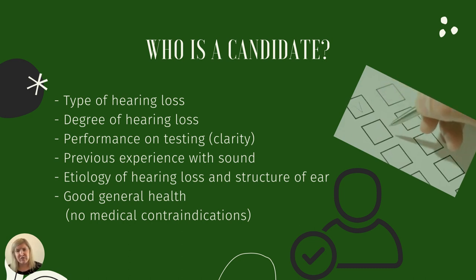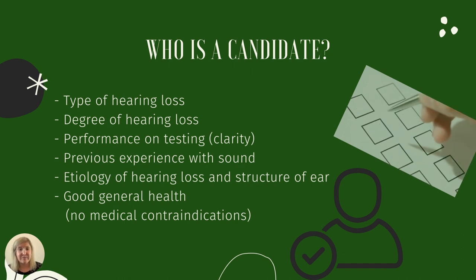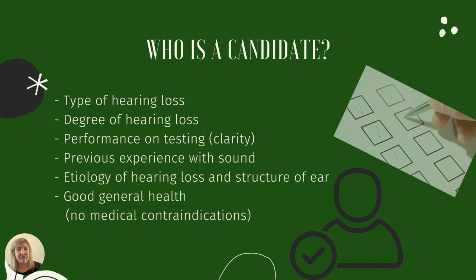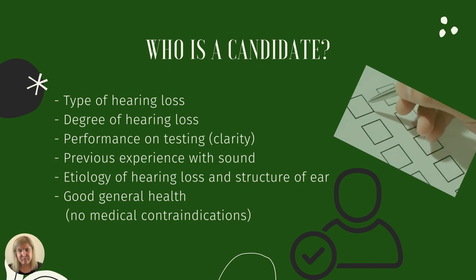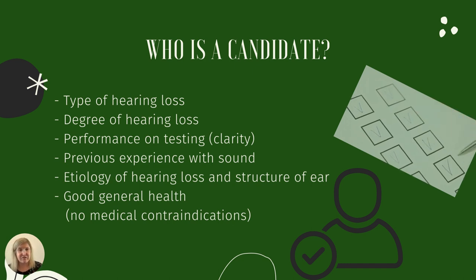Who is a candidate for a cochlear implant? The individual must have a primarily sensorineural hearing loss of a significant degree, and testing must show limited benefit with a hearing aid or two hearing aids. The onset of hearing loss and previous experience of sound is important to consider so that, once implanted, the ear is able to identify speech and make sense of it. In order to successfully perform the surgery, there needs to be imaging of the cochlea to make sure that it's fully developed and of a certain structure.